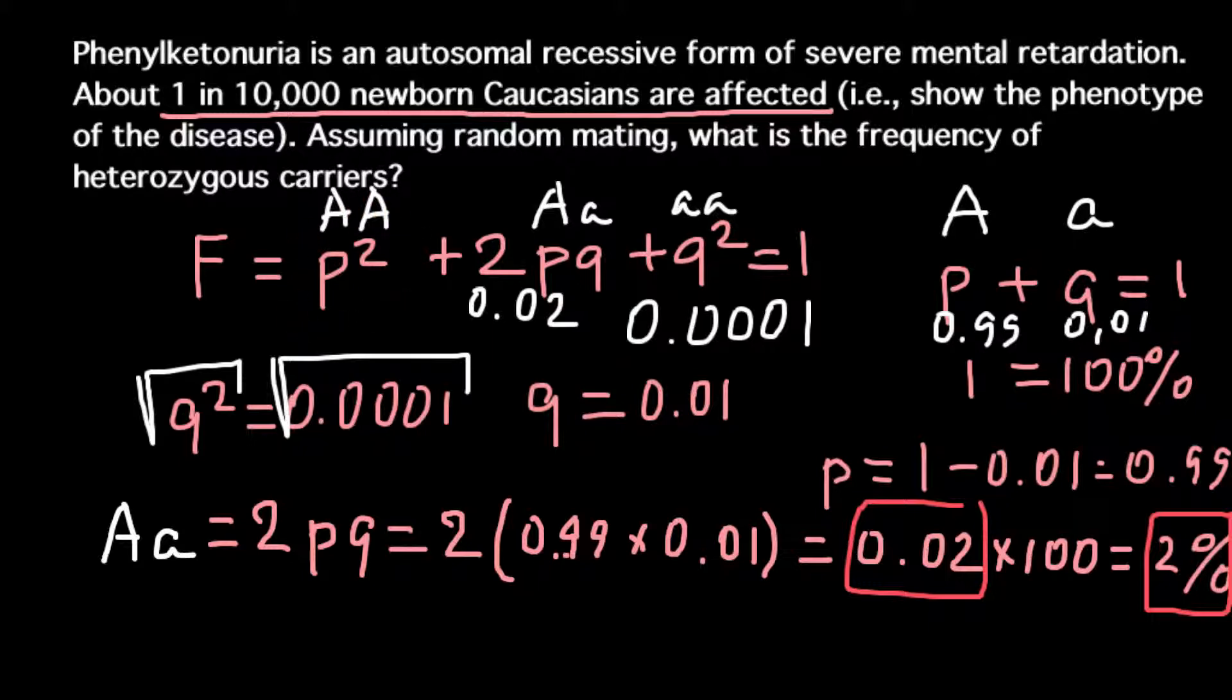And of course you can predict the frequency of the homozygous dominant genotype. We know frequency of this genotype and frequency of this genotype. And we can say that frequency of p², of course you can just multiply 0.99 by itself, or we can combine these two numbers and subtract from the one. So our answer should equal to 1. And we can say that p² would equal to 0.98.